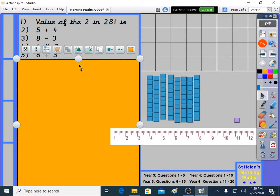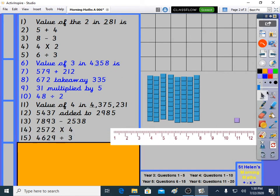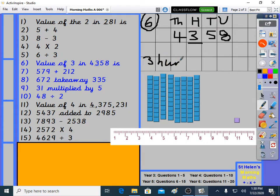Let's move on to year 4. Let's do question 6. Value of 3 in 4,358. Value of the 3 in 4,358. Units, tens, hundreds. It's in the hundreds, isn't it? And thousands. We're looking for the value of the 3. And it's three hundreds. Three hundreds. And if we write that in digits, that is 3, 0, 0, 300.